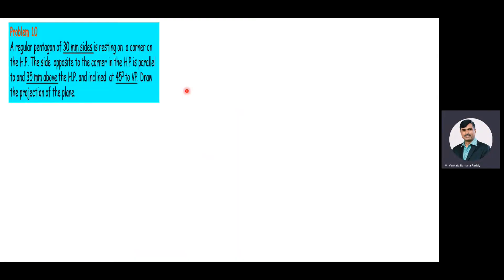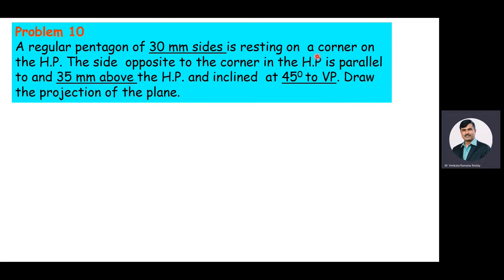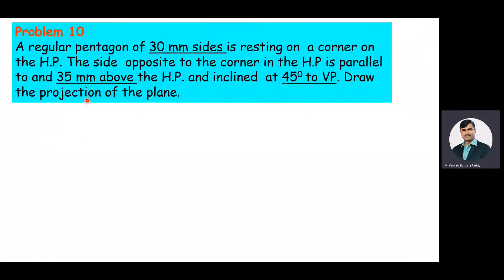The given problem is: a regular pentagon of 30 mm sides is resting on a corner on the HP. The side opposite to the corner in the HP is parallel to and 35 mm above the HP and inclined at 45 degrees to the VP. Draw the projections of the plane.